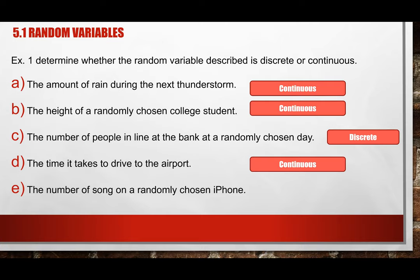Most of the time when it's 'the number of something' — number of pets, number of brothers, number of sisters, number of calls — it will most likely be discrete, because the number cannot be half of something. It's either the whole or nothing. So chapter 5 deals with discrete, and chapter 6 will deal with continuous data.